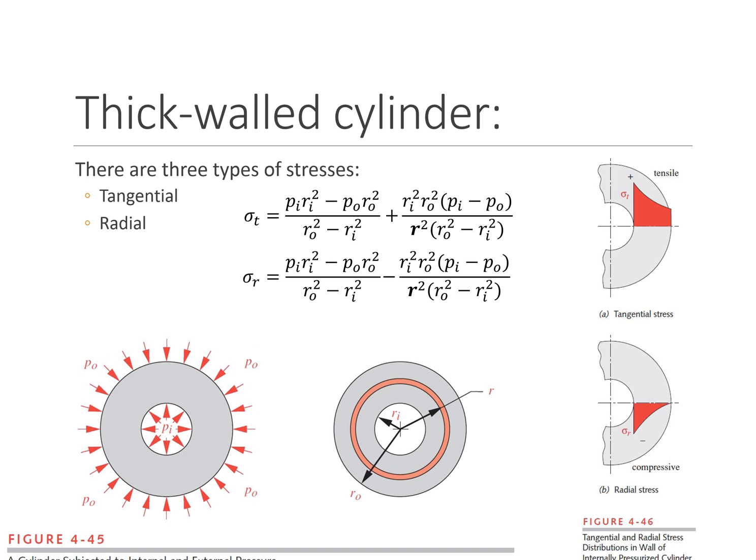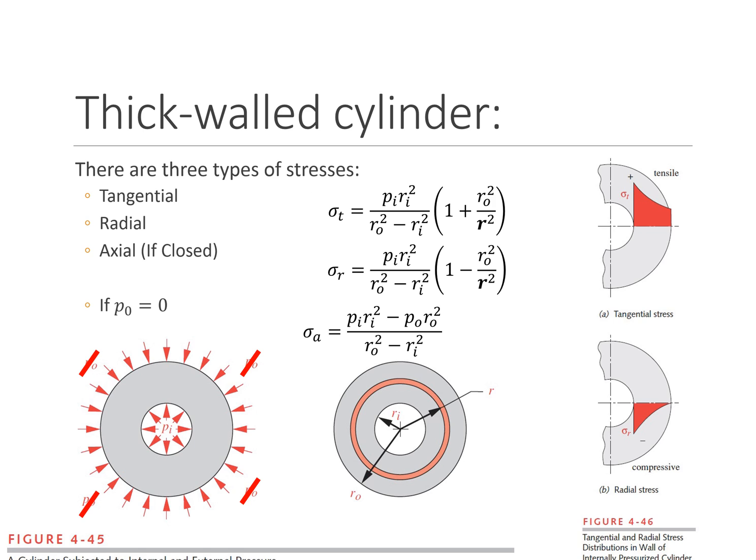As a review of thick-walled cylinders, notice that the constant term for the tangential stress and the radial stress is the same. The variable term — in tangential we add, and in radial we subtract — but the number being added and subtracted is the same. The worst case is occurring on the inside edge of the cylinder. And if it's closed, we have an additional term: the axial stress. If we simplify for zero outside pressure, the equations simplify further.